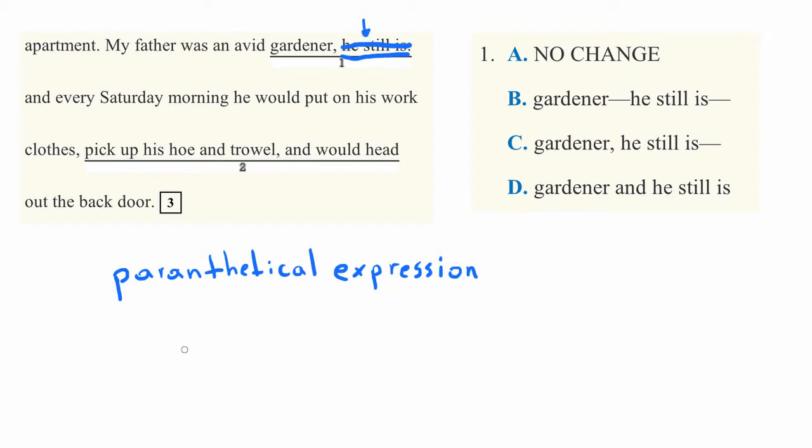This is just extra information. It doesn't have to be there. Now somehow we need to indicate that this is not a necessary part of the sentence. And one way you can do that, the reason that it's called parenthetical, is because it can be surrounded with parentheses.